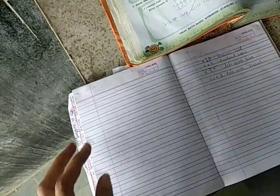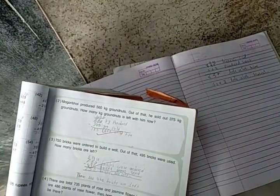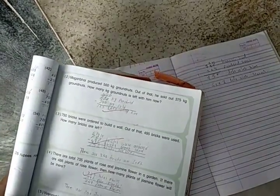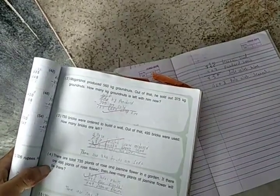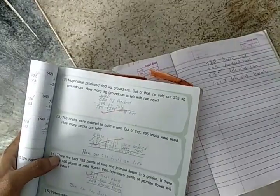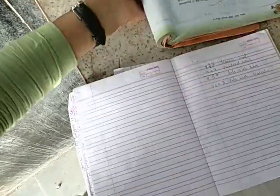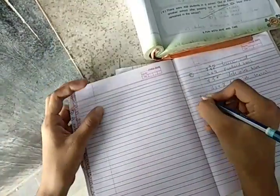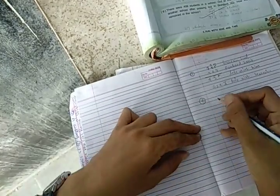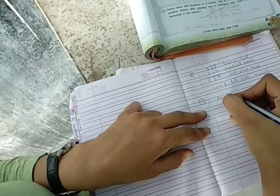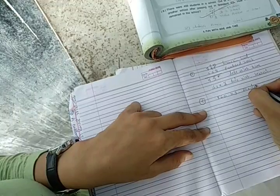Second question. Magan Bhai product 560 kg groundnut. Out of that, he sold out 375 kg groundnuts. How many kg groundnuts is left with him now? Magan bhai ke paas kitni products hai? 560 kg product.